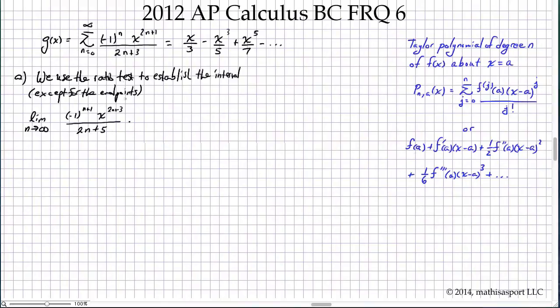What happens here in the denominator? If we increase n by 1, since we're multiplying 2 by that n, that's going to increase it by 2. So this becomes 2n+5. Now we're going to divide by the nth term, but instead of dividing, we save a step by simply multiplying by its reciprocal. That's going to be 2n+3 over x to the 2n+1, and then we also have this negative 1 to the n term.